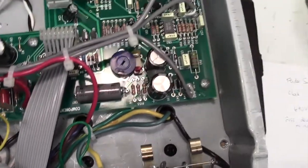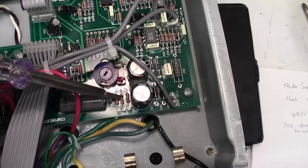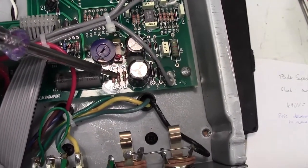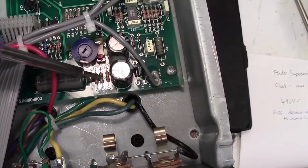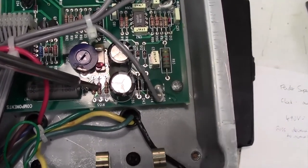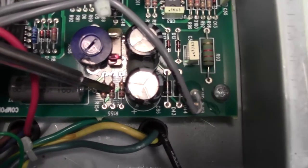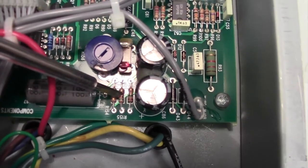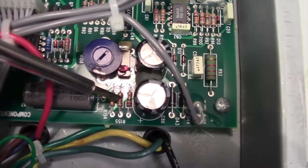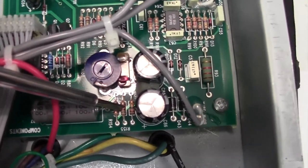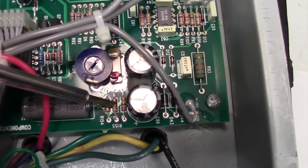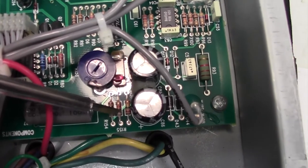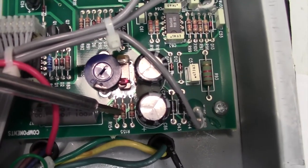What you're going to have to do is fiddle around with this resistor I'm pointing to here, the middle of these three, R155. To increase the bias current, which is what we want to do, I need to decrease the value of that resistor. And that's good news really, because all I need to do is tack another resistor across it in parallel, decreasing the value.